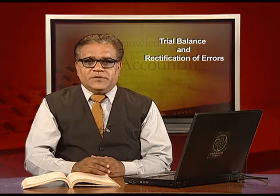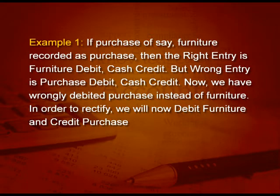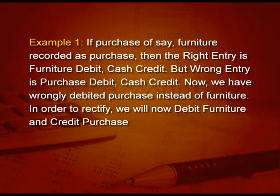To take an example, if purchase of furniture is recorded as purchase. Now, what is the right entry? Furniture debit and cash credit. But what you have done? The wrong entry is purchase debit and cash credit. Now, we have wrongly debited purchase instead of furniture. In order to rectify, we will now debit furniture and credit purchase.